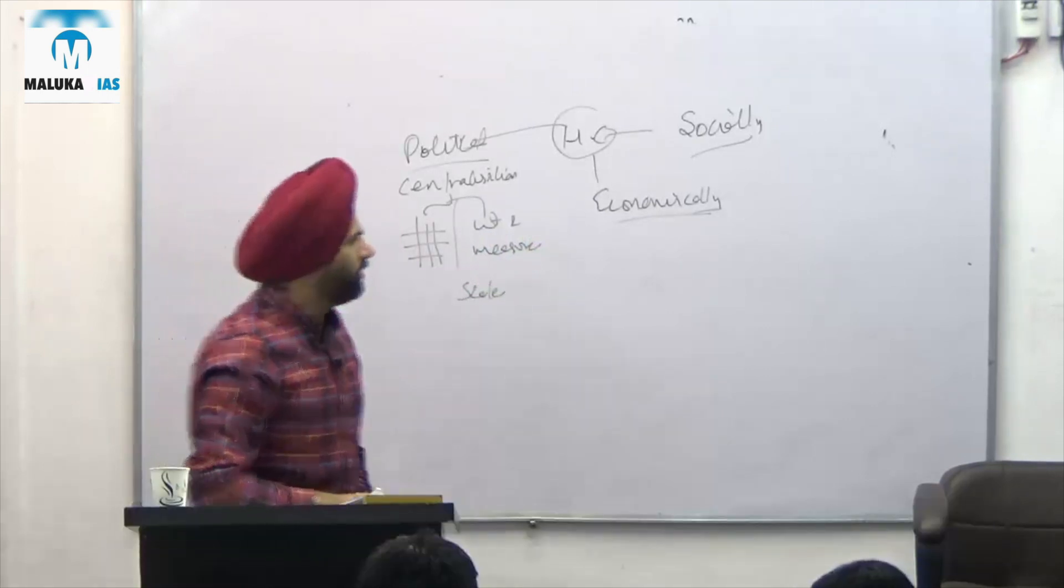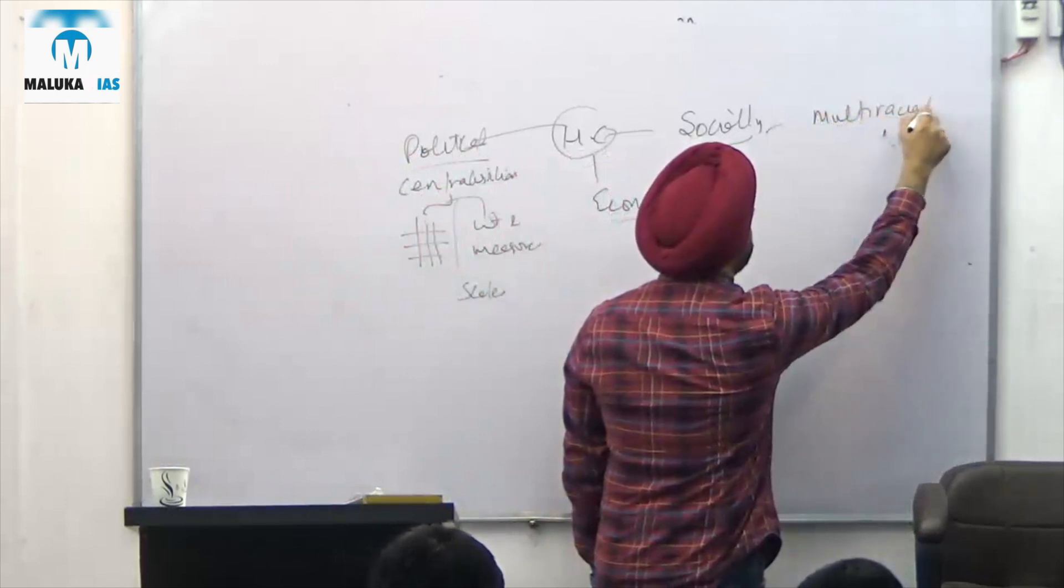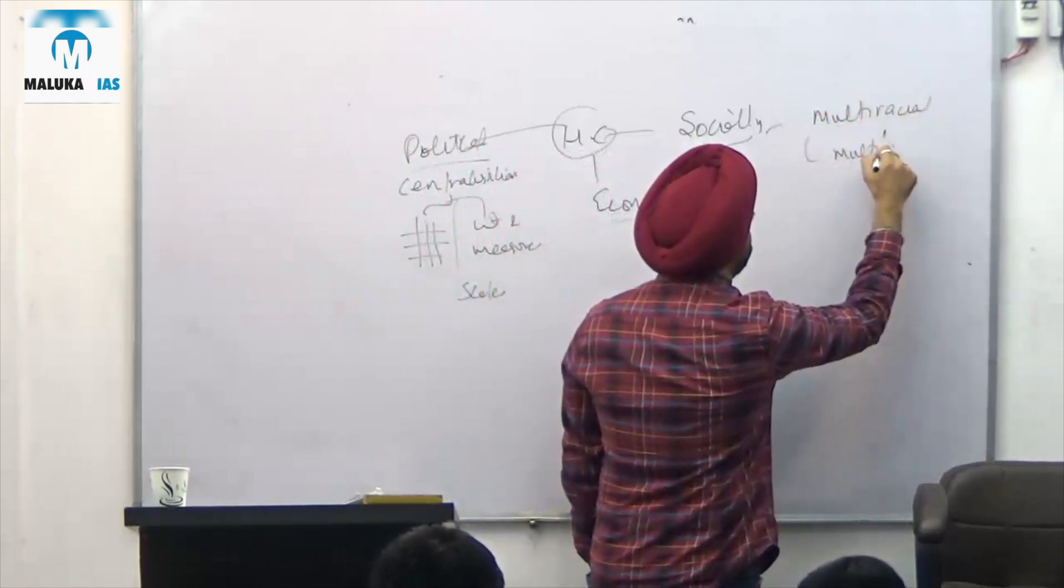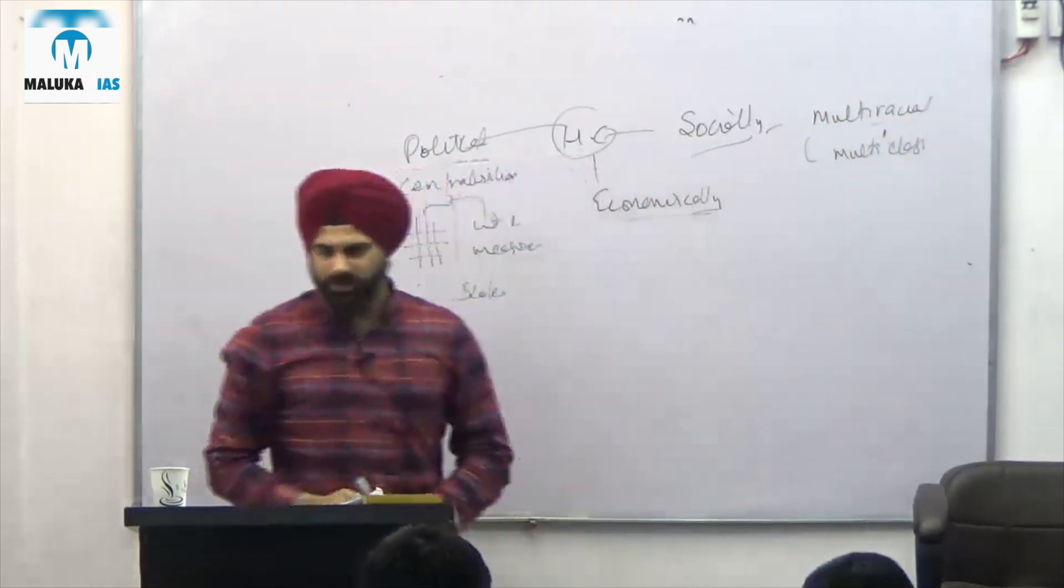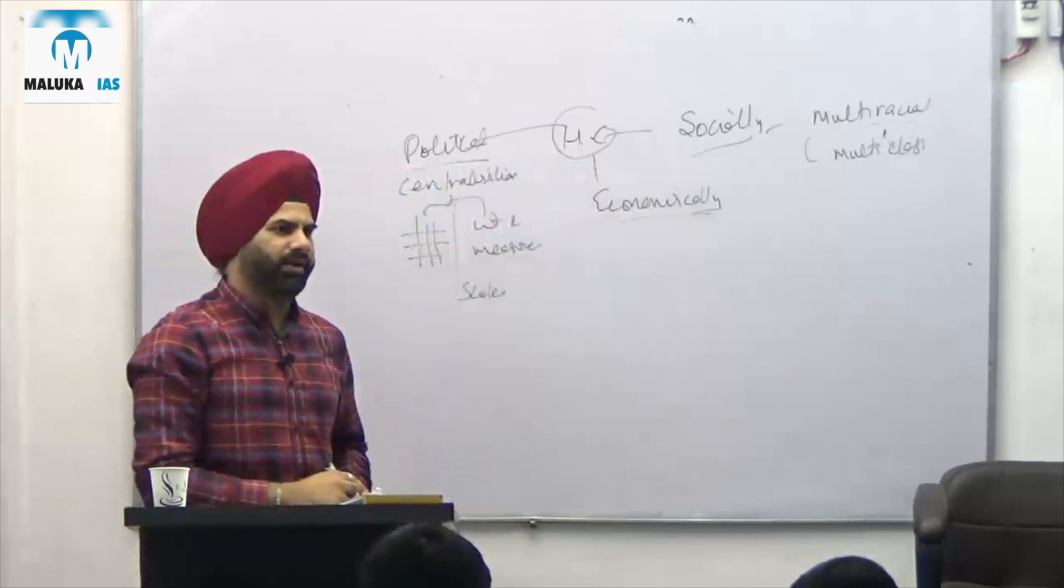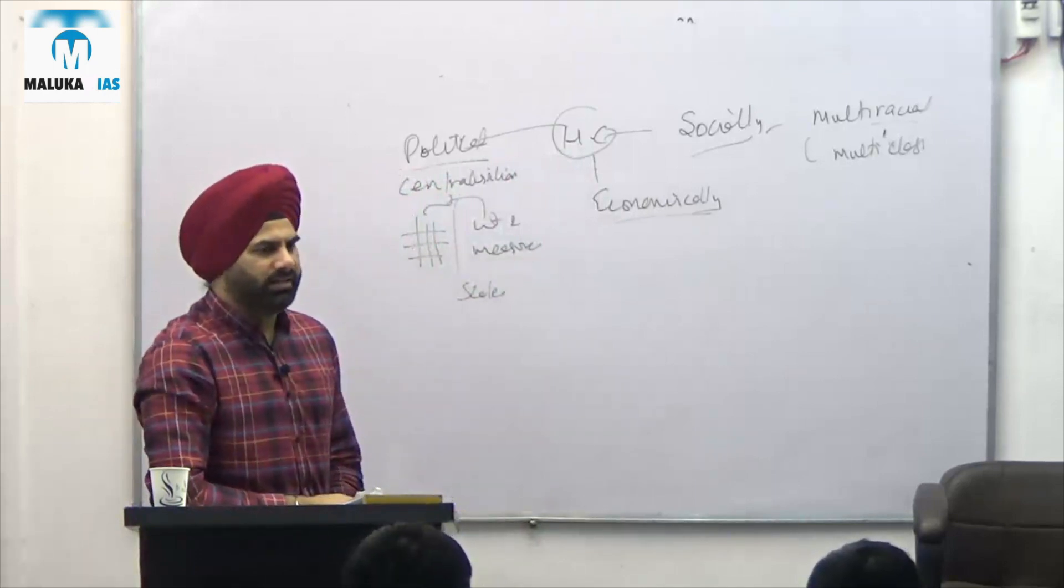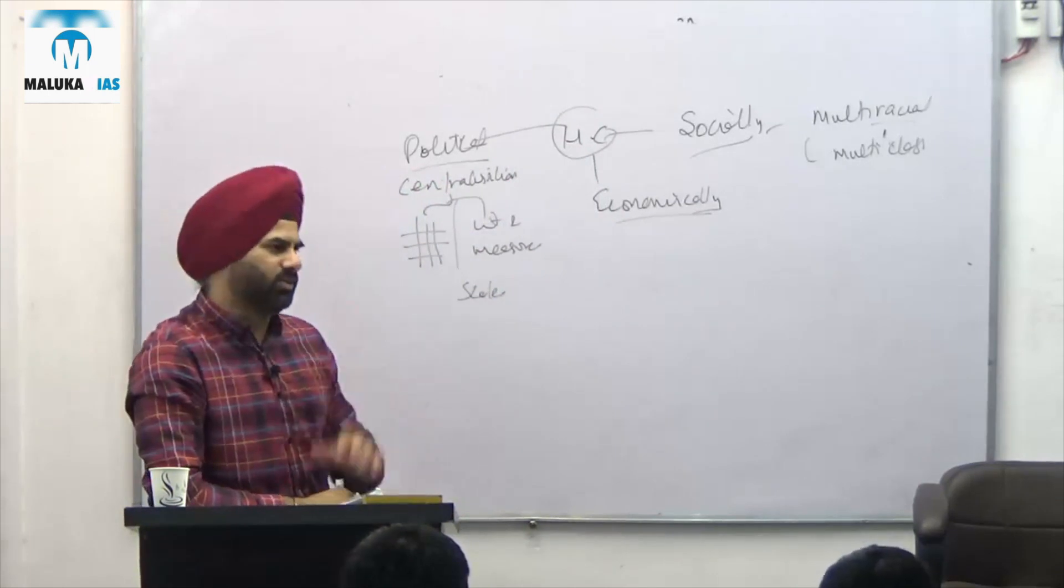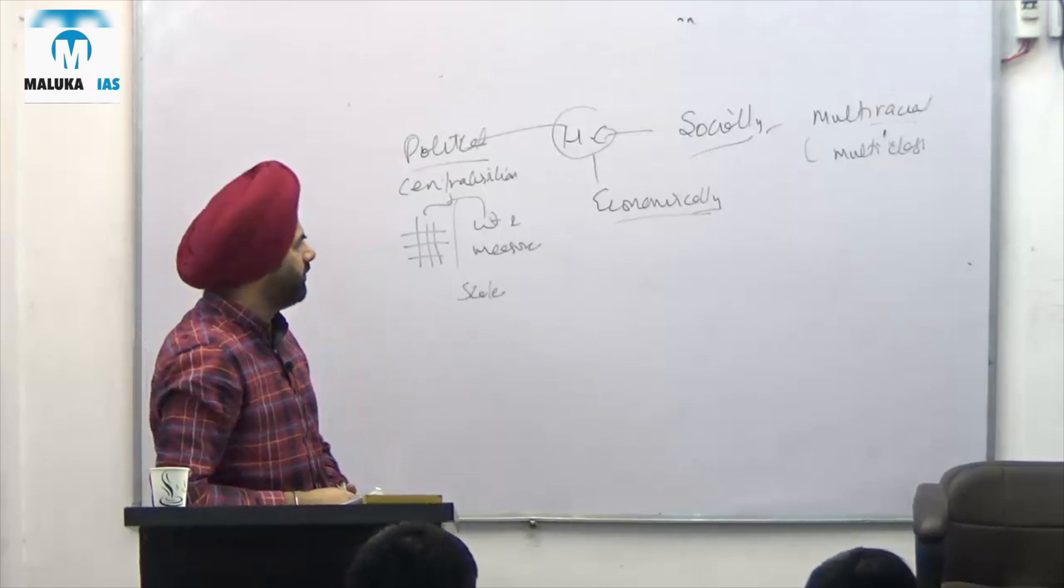Socially also, multi-racial and multi-class civilization was it. Different races, for example the Alpine, Proto-Australoid, Mongoloid, Mediterranean - these people were living. People were rich and poor and they were living together with peace, and same is the context present also. People of different religion, caste and other things they are living with peace.